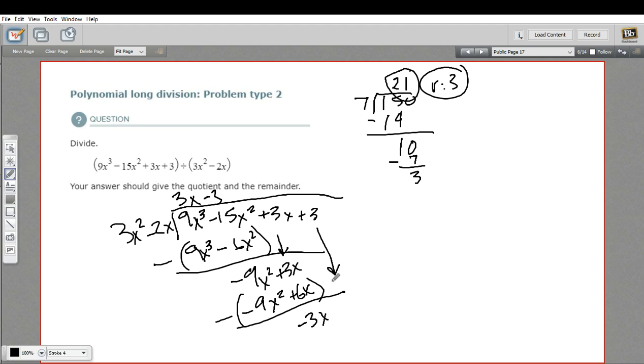Next question we have to ask is what can I multiply 3x² by to get negative 3x? The answer is nothing. This has got a lower term than this. So we're done. This is our answer. And what remains here is our remainder. So our answer is 3x - 3. And our remainder is negative 3x + 3.